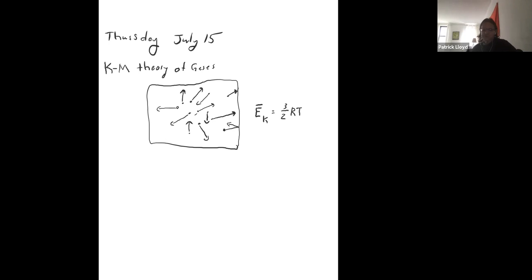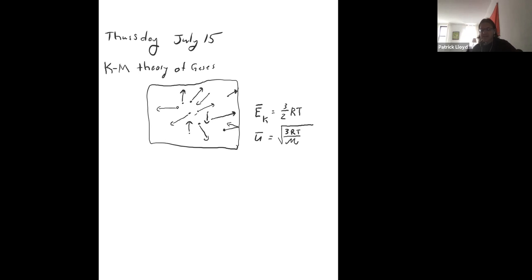That average kinetic energy is proportional to temperature. We also have a related equation for average velocity — your textbook uses 'u' for velocity, though using 'v' is fine. The average speed is the square root of three RT divided by the molar mass M. This is often referred to as the root mean square, or RMS, average.